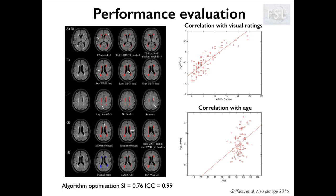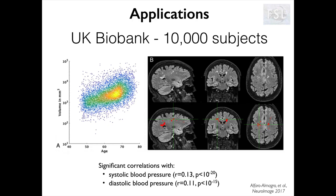In terms of evaluating performance, one possibility is correlating the total lesion volume with a visual rating scale. We used the age-related white matter changes score, which goes from 0 to 30, and found good agreement with the volumes calculated by Bianca. Another option is to correlate volume with a variable not derived from images but known to be related to lesion amount. Since age is one of the biggest risk factors for white matter hyperintensities, we correlated volume against age — and in a specific cohort with a small age range, the relationship was still visible.